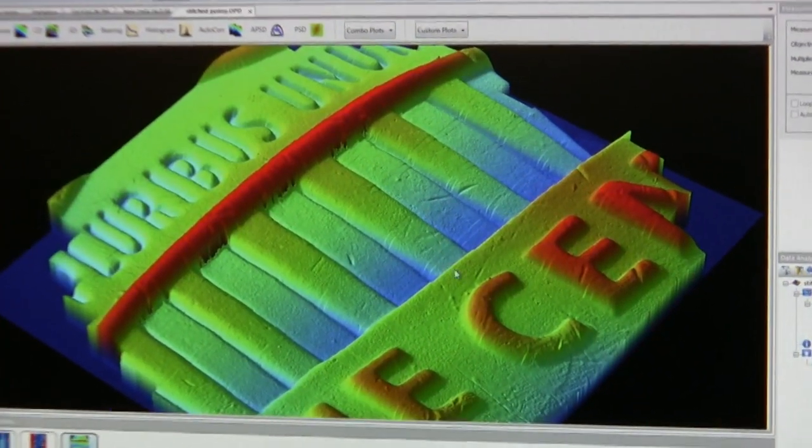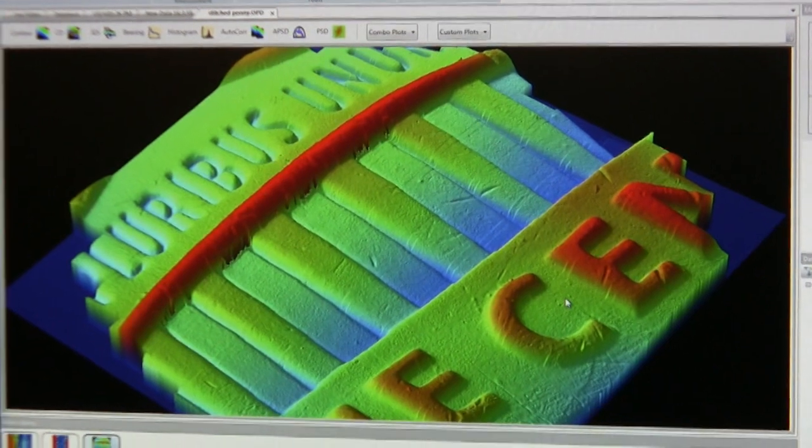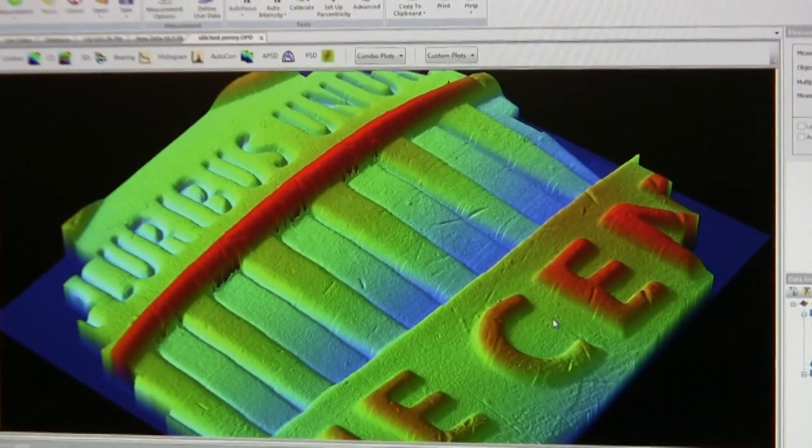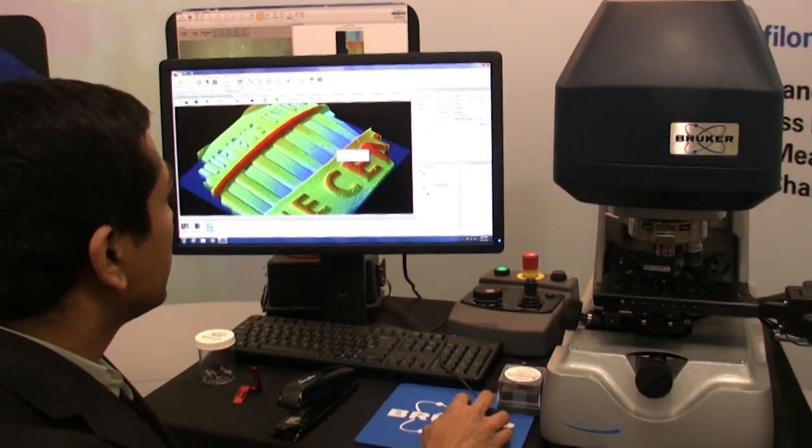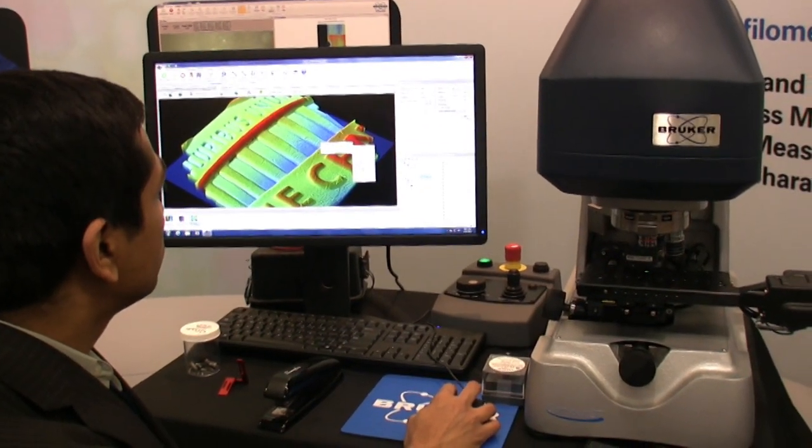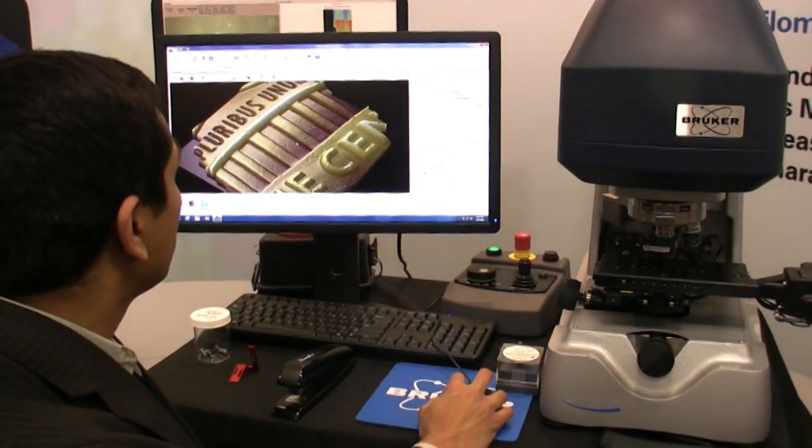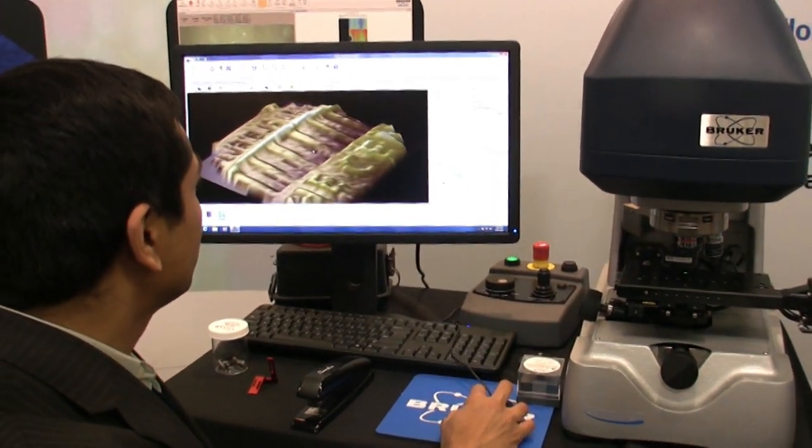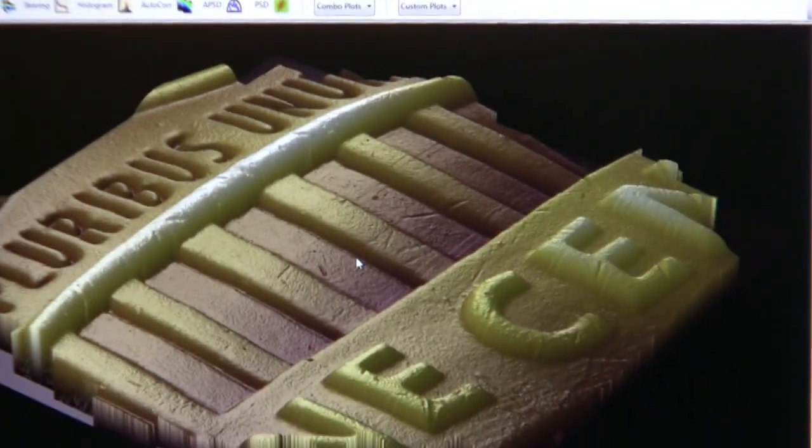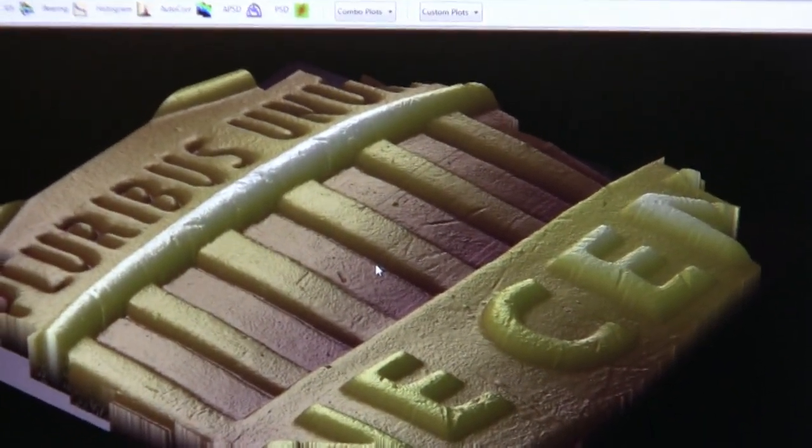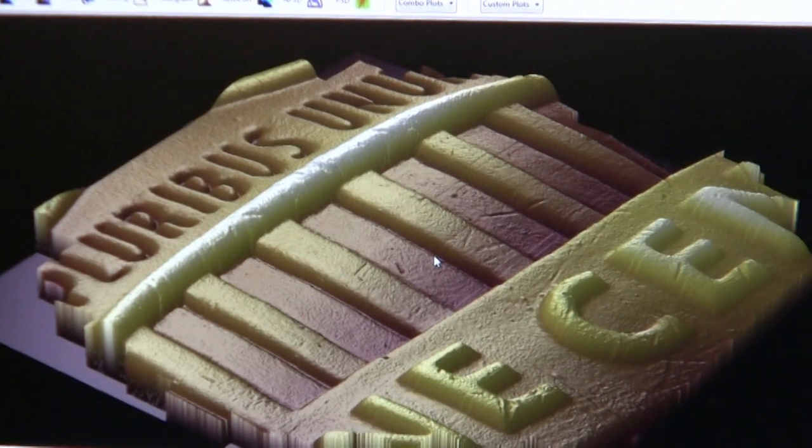You can zoom in on specific locations on the sample and continue to get very high resolution data. It's a very large data set with lots of information. You can change the color - the penny may look better in this color. It can look like copper, but the color is really a false color. The important information here is the three-dimensional topography that you can get from the surface.